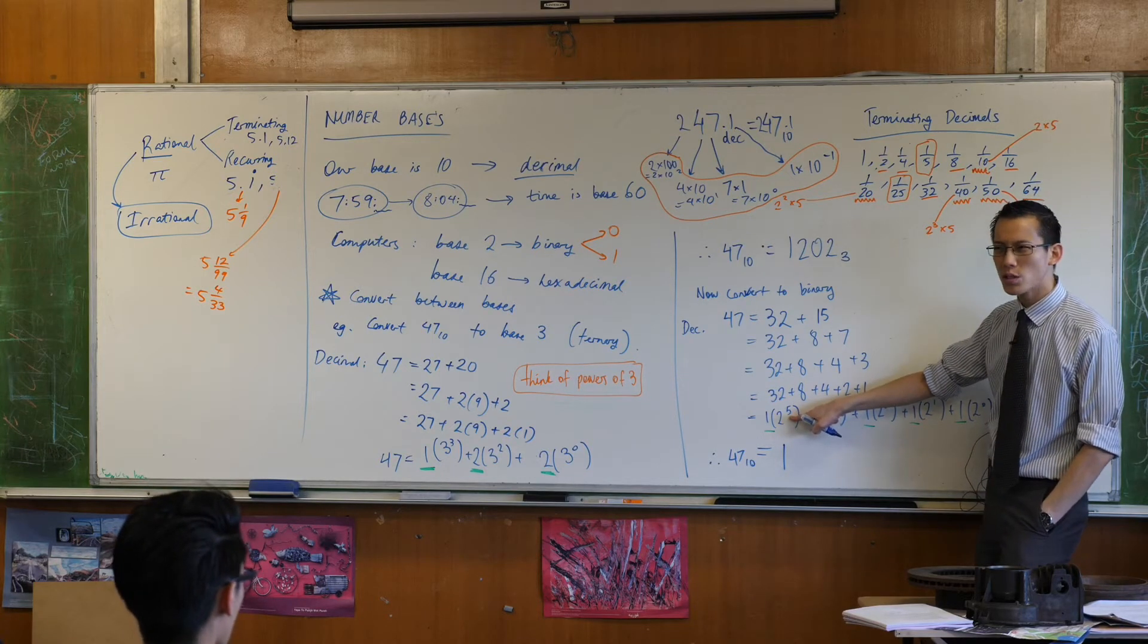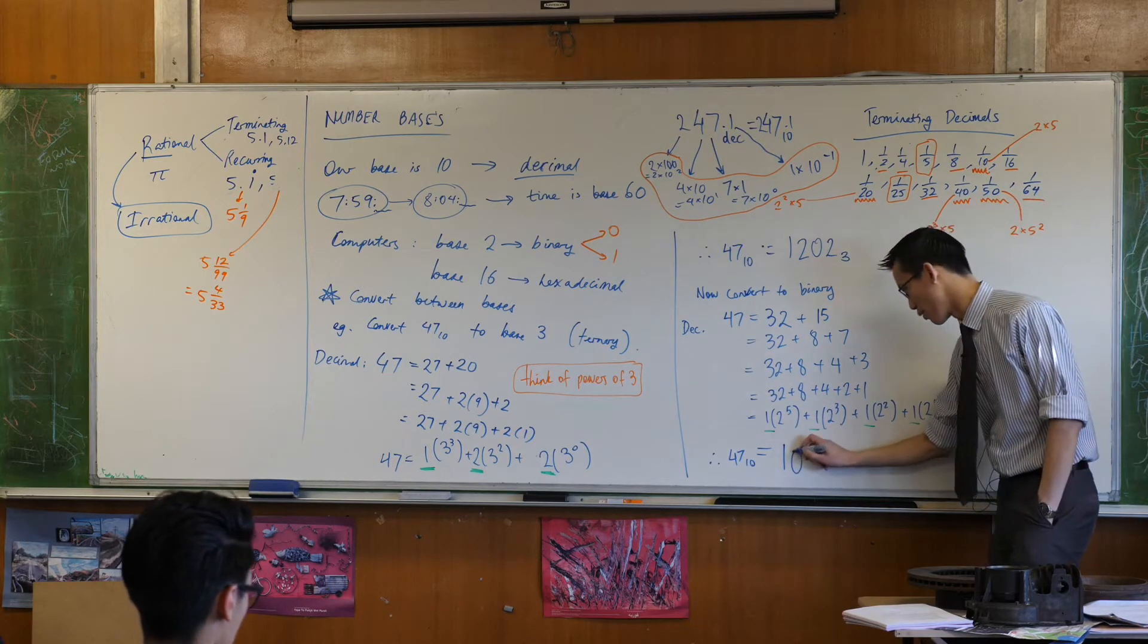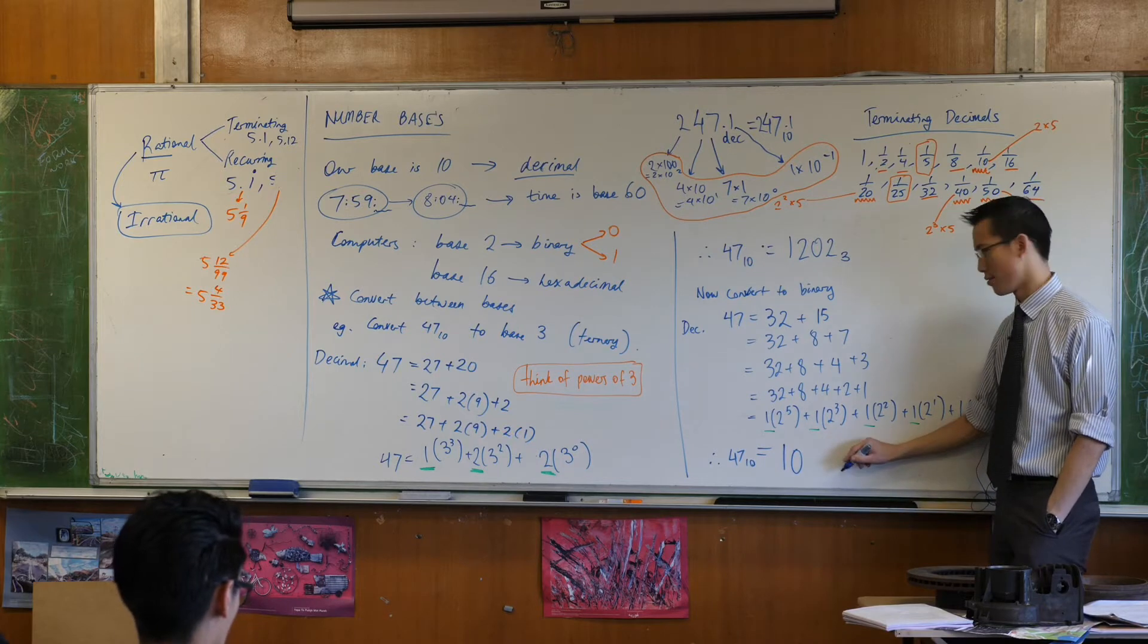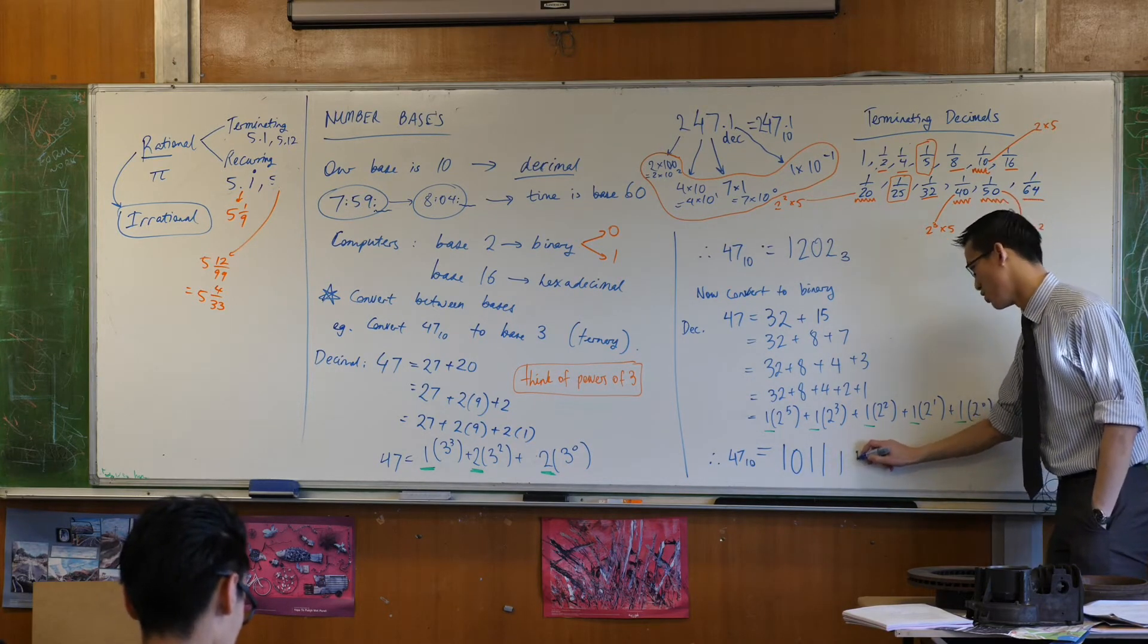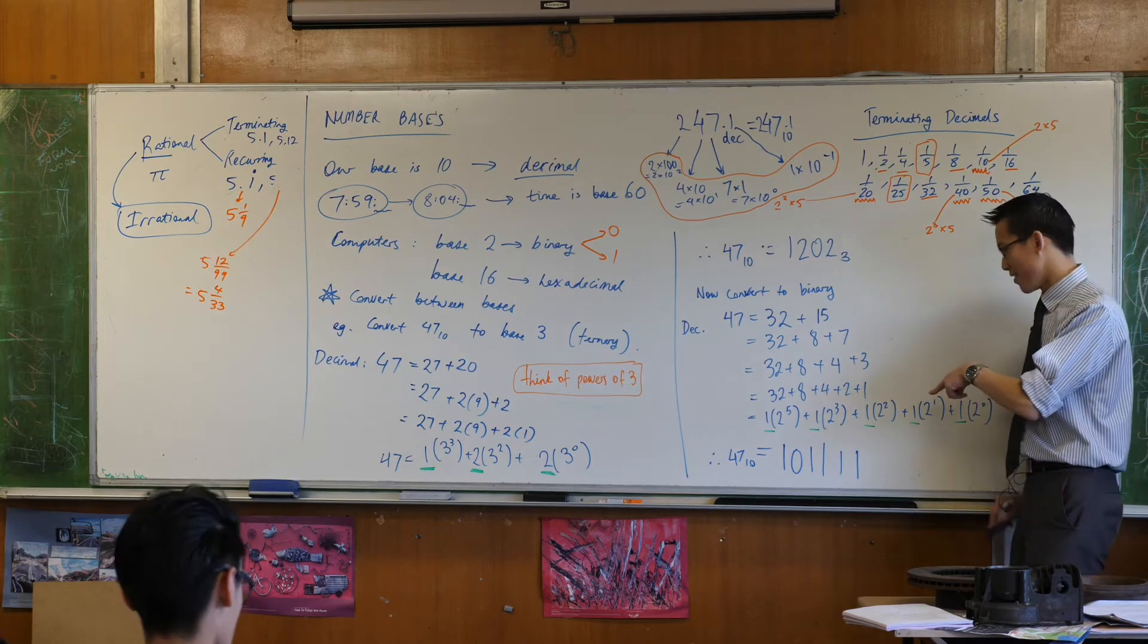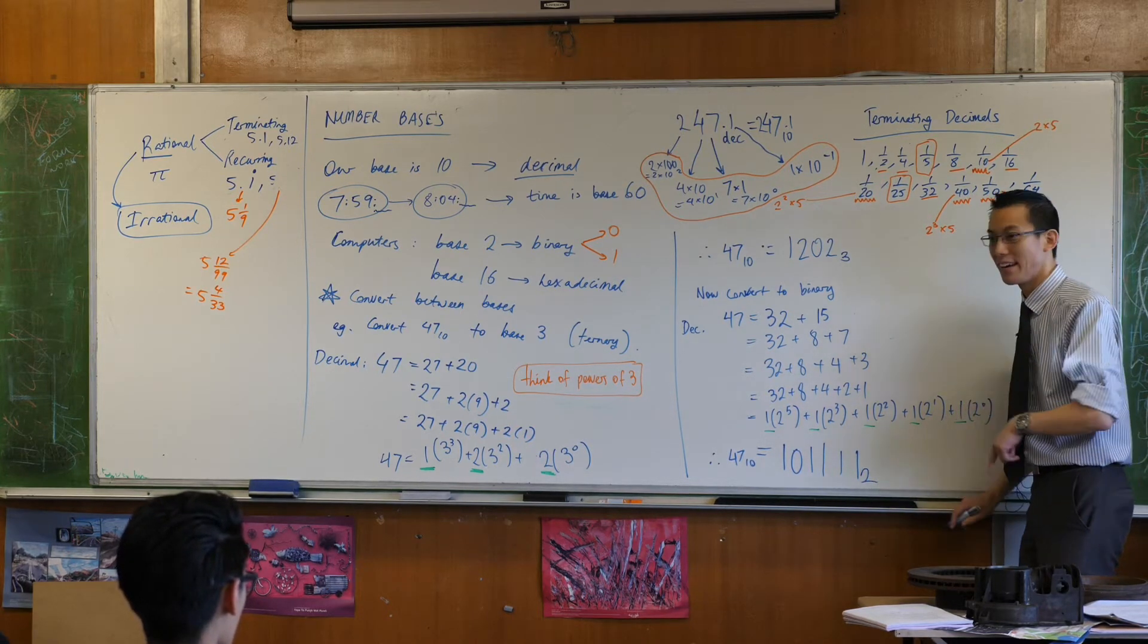That's how many 2 to the 5s I have. How many 2 to the 4s do I have? 0. How many 2 cubes do I have? 1, 2 squareds, 2 to the 1s, 2 to the 0. That is 47 in base 2.